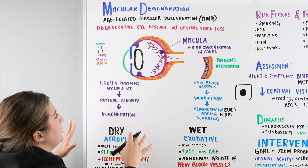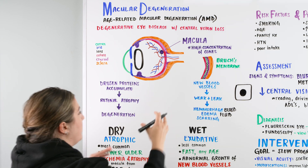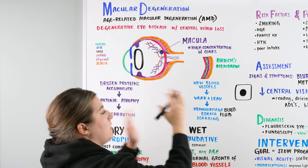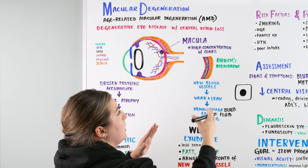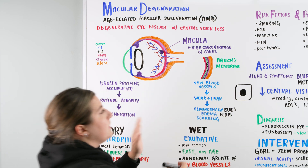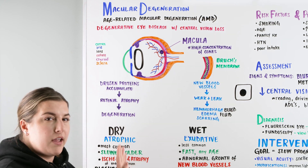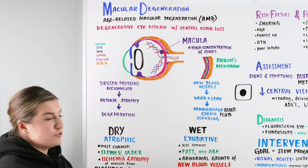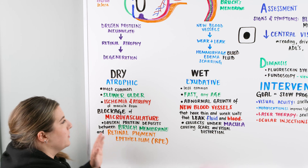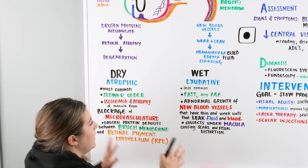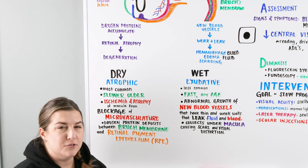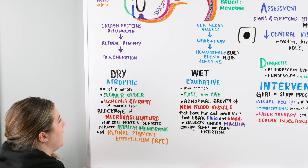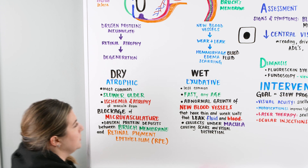So macular degeneration is an effect on the macula — whether it's dry from proteins accumulating, or fluid and blood in the wet version. Let's look at a dry versus wet differential to get an idea of what the difference is between the two.